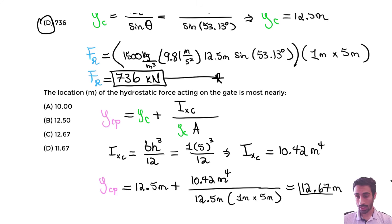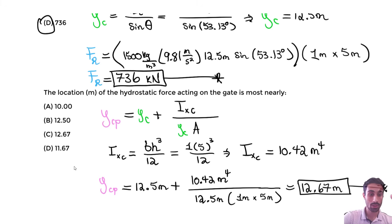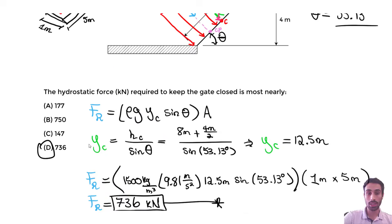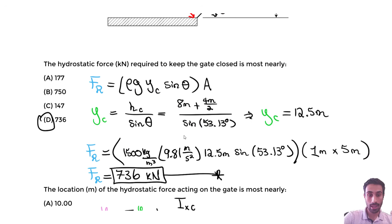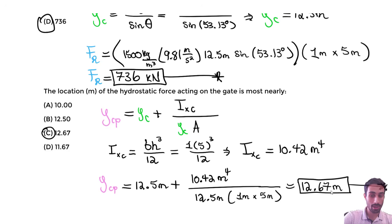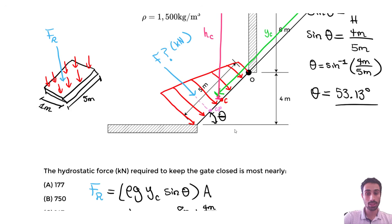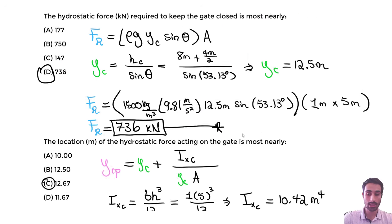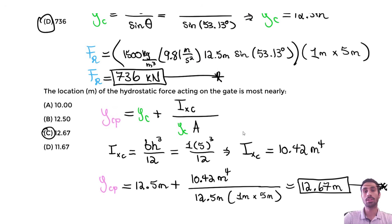So 12.67 meters is the slanted distance from the top water surface to where the force actually acts — the center of pressure. This is below the centroid Yc of 12.5 m, which makes sense since the center of pressure is always slightly below the centroid. That's all for this video.